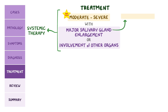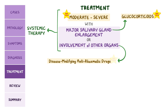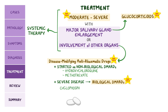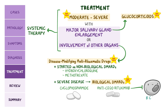Individuals with involvement of other organs are started on disease-modifying anti-rheumatic drugs, or DMARDs. Most individuals are started on non-biological DMARDs like hydroxychloroquine and methotrexate. By contrast, severe disease gets biological DMARDs, all of which suppress some part of the immune system, such as the alkylating agent cyclophosphamide and the anti-CD20 antibody rituximab, which targets B cells.